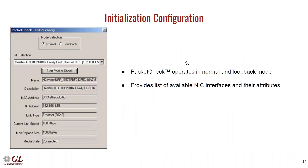Now we'll go over the actual application and see some screenshots — how to use the application and what options are available. This slide shows the initial configuration. As previously discussed, we have two modes: normal and loopback. Here the normal mode is selected, and this section allows us to select the NIC interface. The application automatically detects available NIC interfaces and lets you choose which one to work on. The attributes of the selected interface are displayed — driver name, description, MAC address, IP address, link type, speed, maximum payload size, and media state (connected or disconnected).